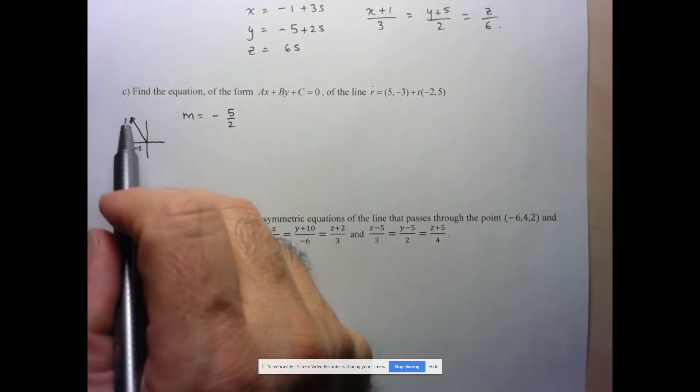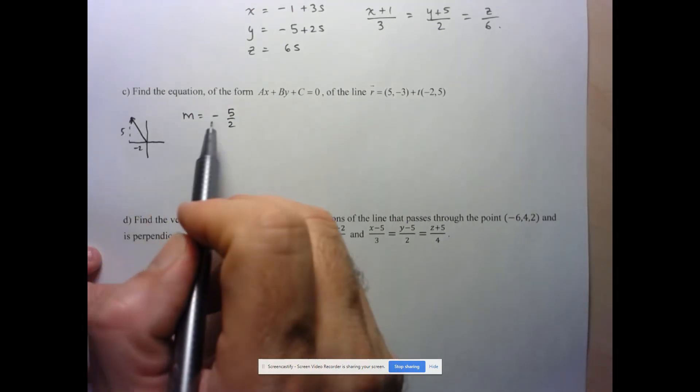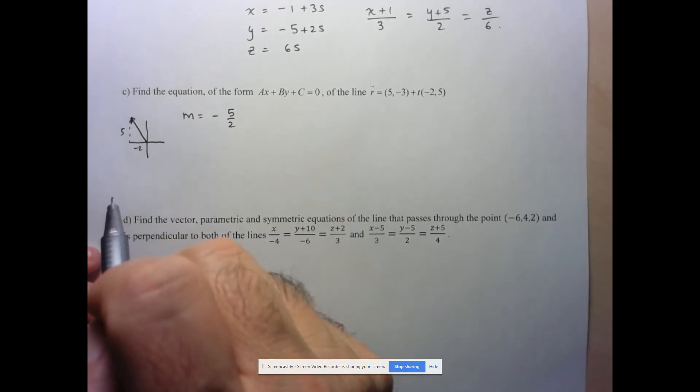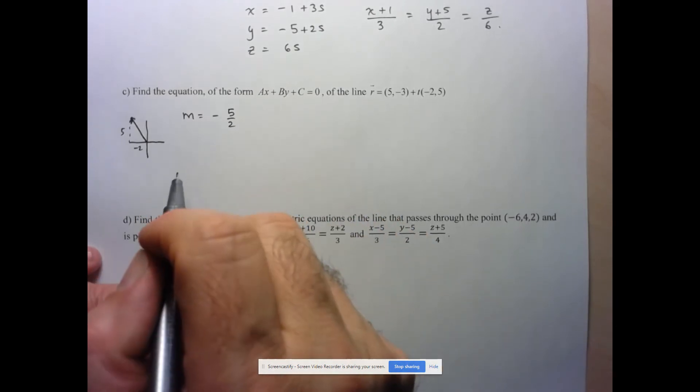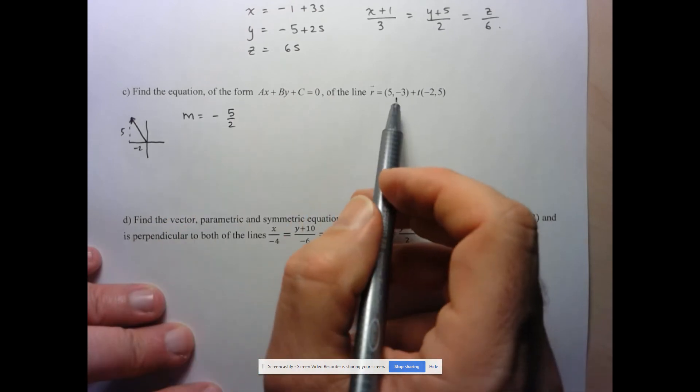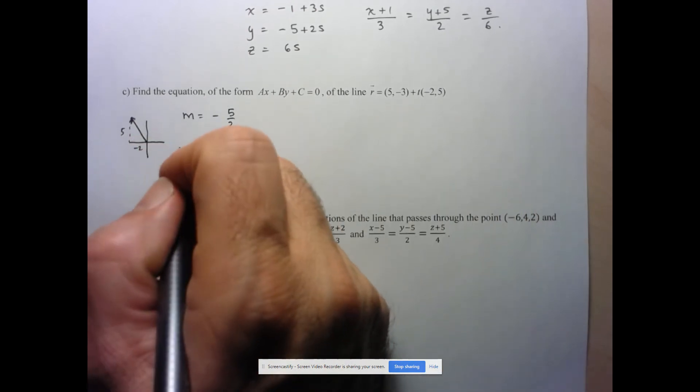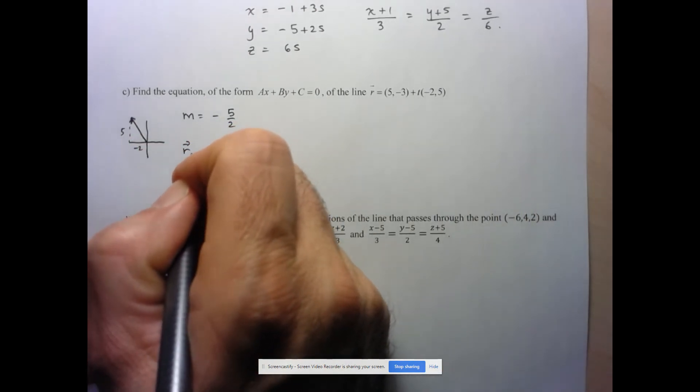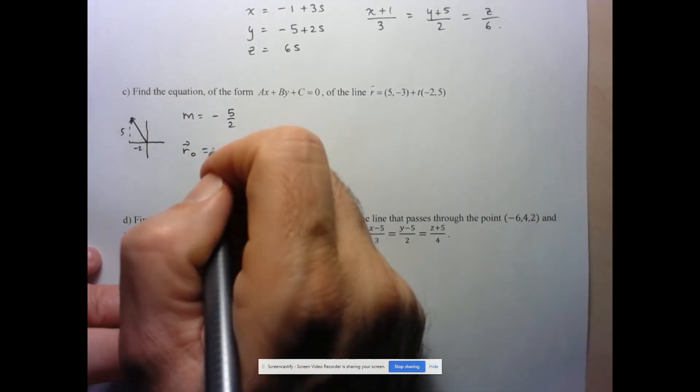So again, as X goes up by 2, Y goes down by 5, so negative 5 over 2. All right, so now that I've got my slope, well, I already have a point on the line. I know that the point, so here my vector to my given point is just going to be 5, negative 3.